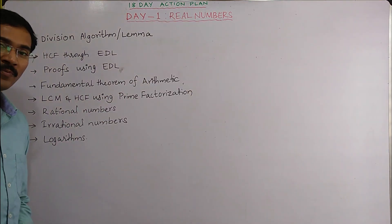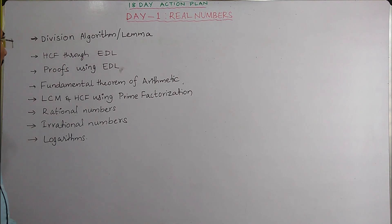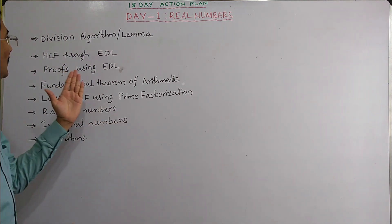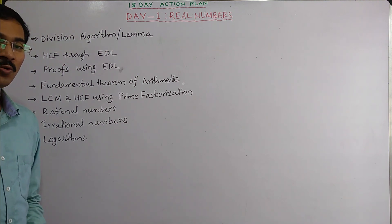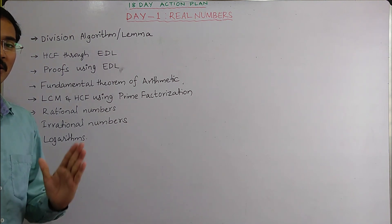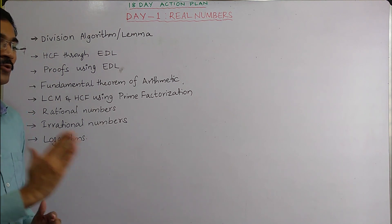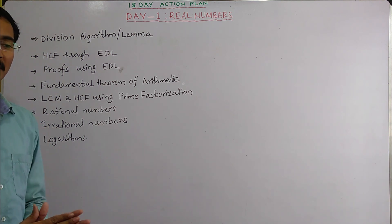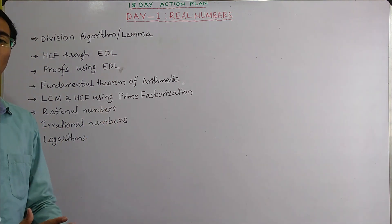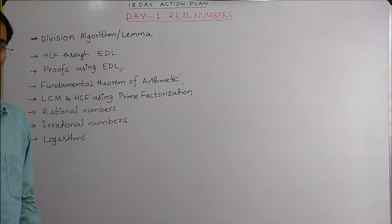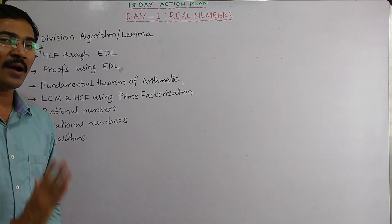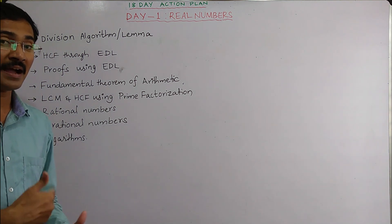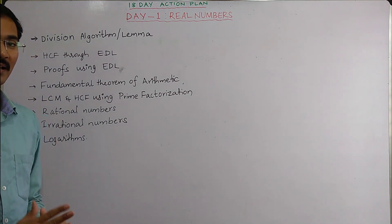Now, what do we have in this chapter? The first part deals with Euclid's Division Lemma or Euclid's Division Algorithm. It is actually a lemma when we use it for proving something; the steps followed are called the algorithm. So don't get confused — it's all the same. You must be able to understand the lemma and apply it.